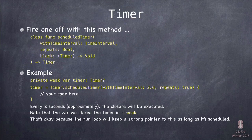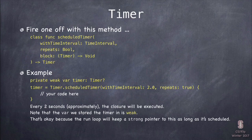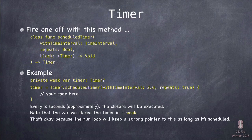Here's an example. This method is called scheduledTimer, and it returns the timer that it creates when it schedules it and puts it on the run loop. So I say timer equals scheduledTimer with timeInterval 2, repeats true, and in the block I put some code. That's going to execute that code two seconds from now approximately. And since it's repeats true, it's going to execute it again two seconds later, and then two seconds after that until I stop this thing.